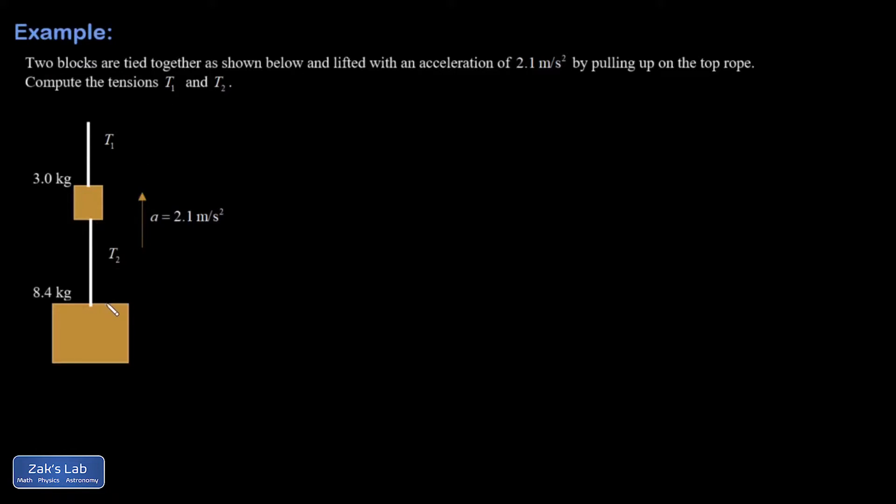We have a block tied to a block and the whole combination is being pulled up. I'll go ahead and put in red here just to indicate a force vector. I have this force vector pulling up causing the whole thing to accelerate at 2.1 meters per second squared, and I'm going to start putting all the force vectors I need into this diagram.